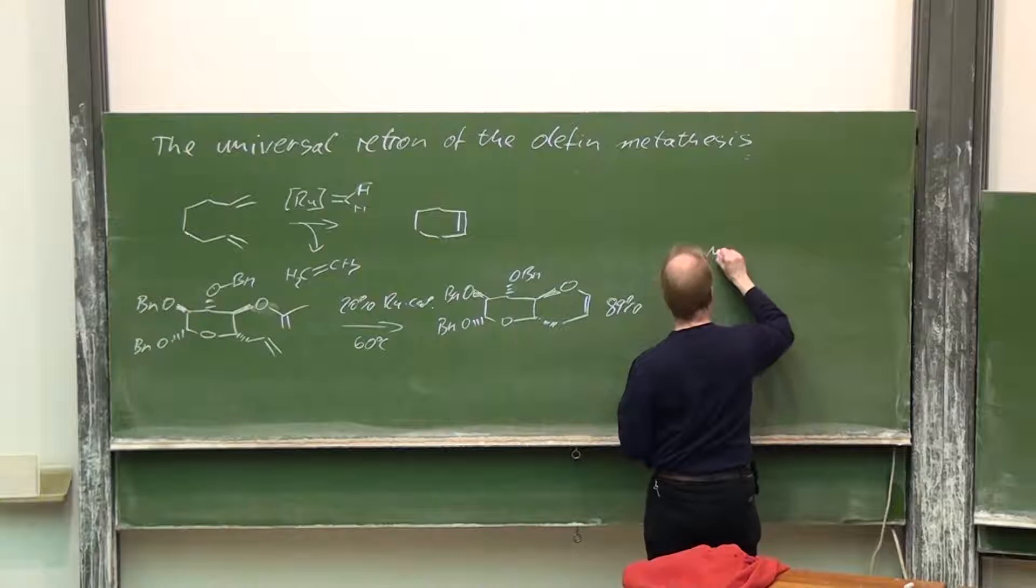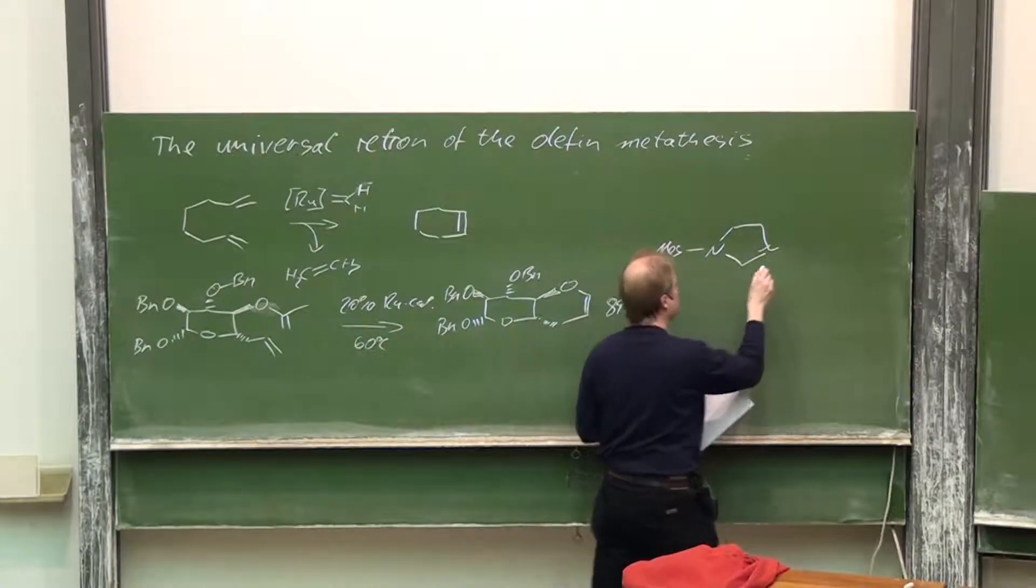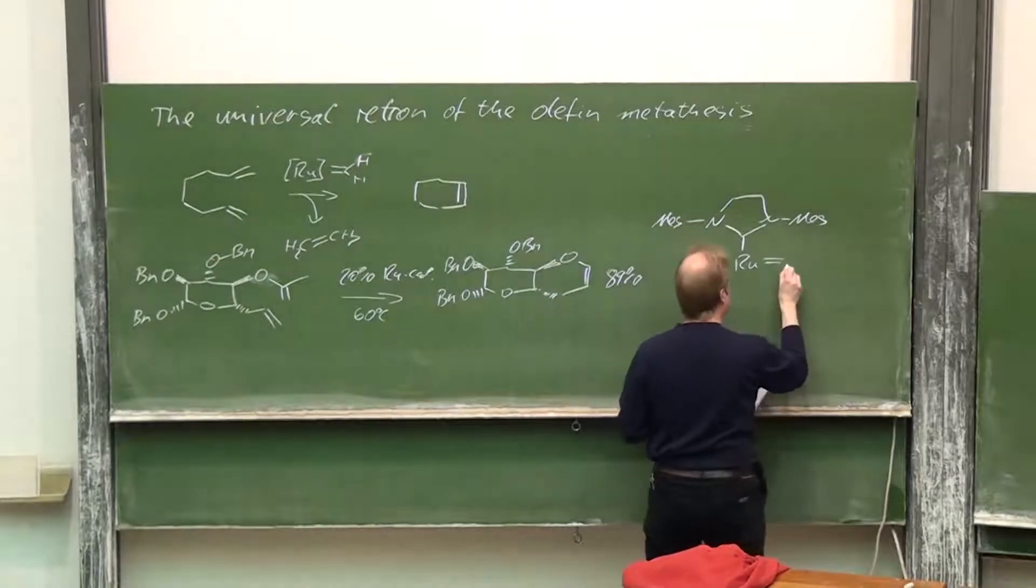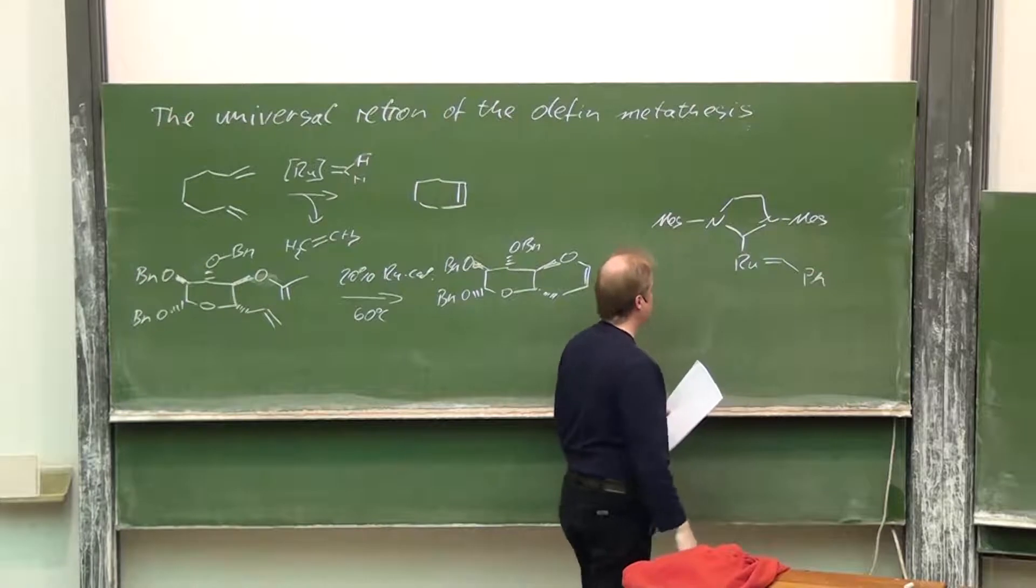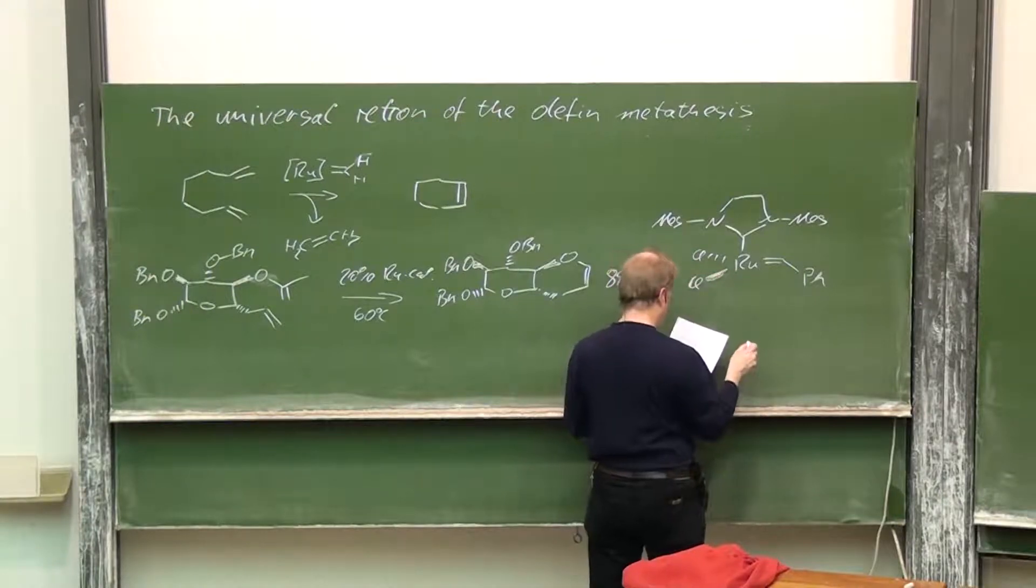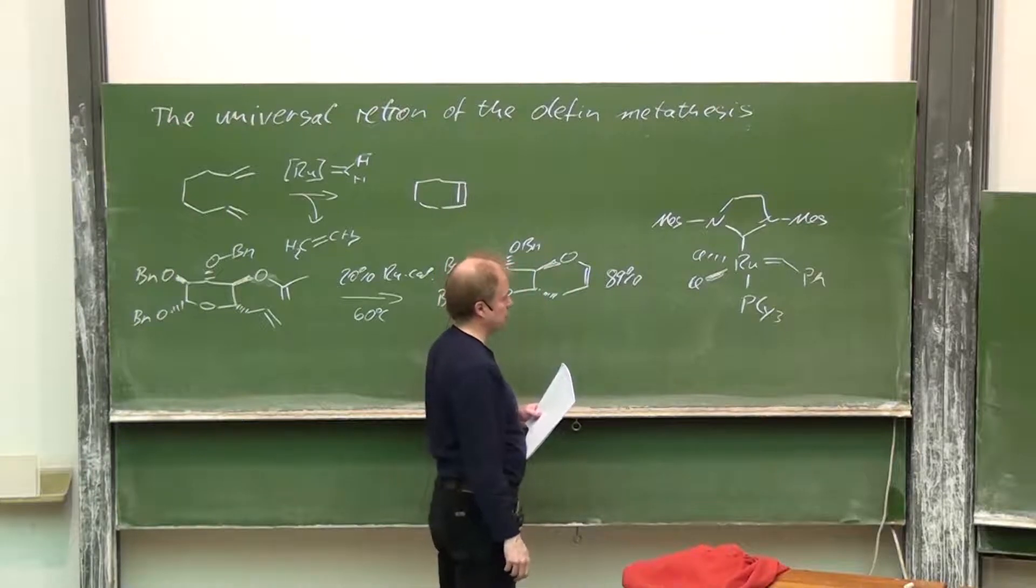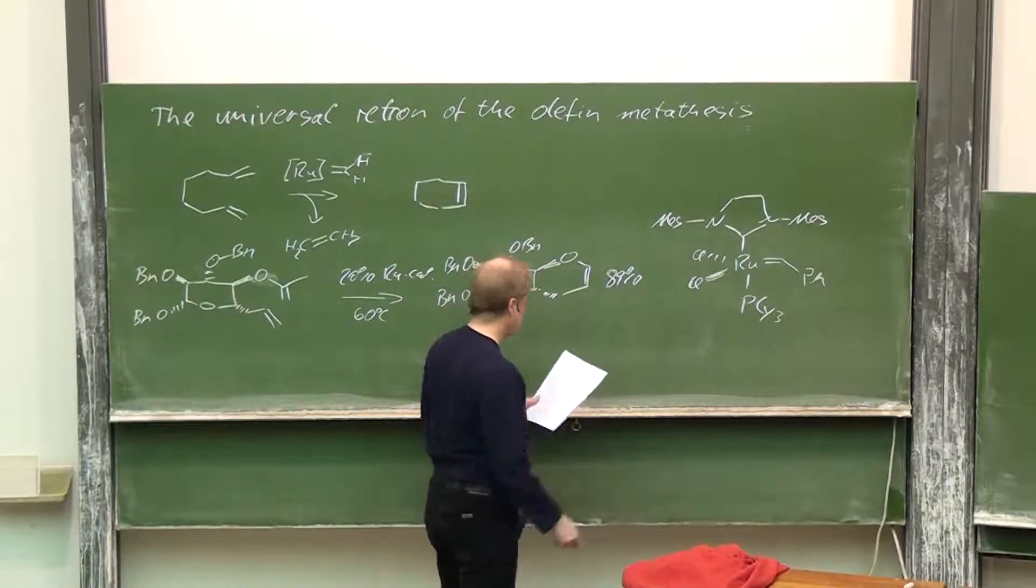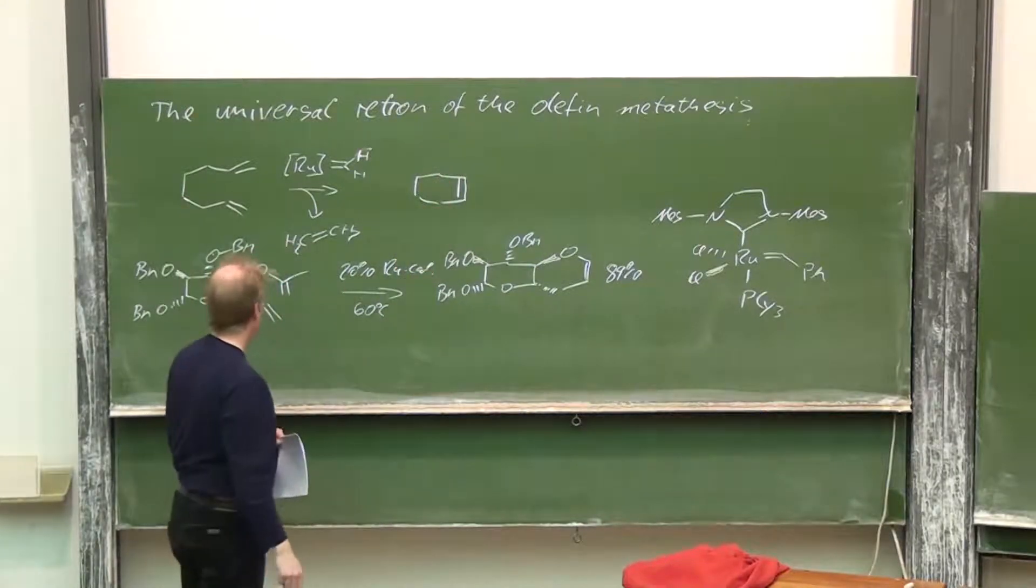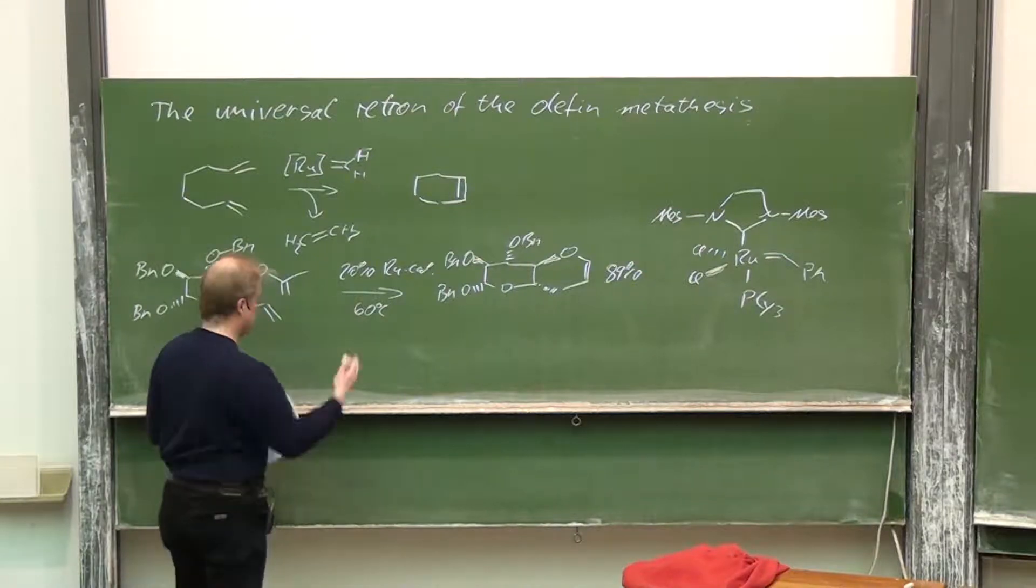A heterocyclic carbene complex with sterically hindering mesityl substituents. Here we have ruthenium coordinated, starting with this carbene complex, chloride here, chloride there, and a sterically demanding tricyclohexyl phosphine ligand. So also heteroatoms at that position are, by choosing the right catalyst and the right conditions, also accessible as target molecules.